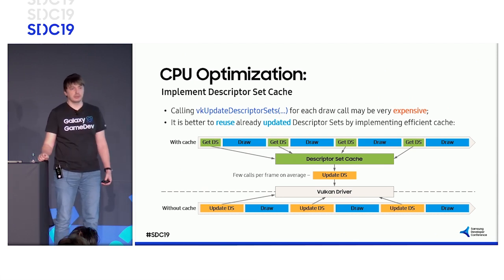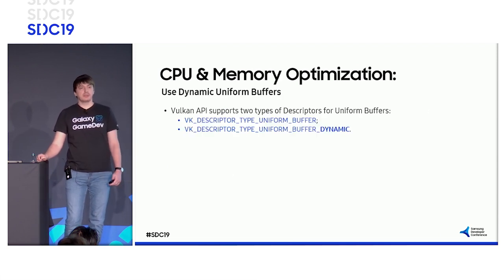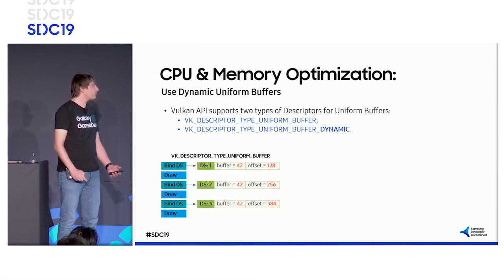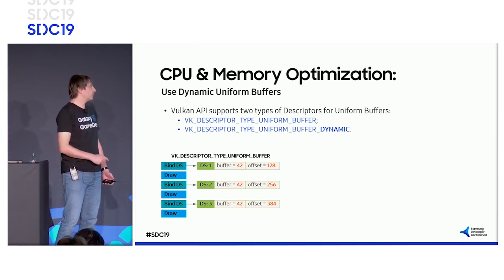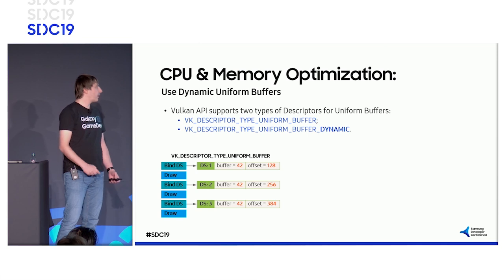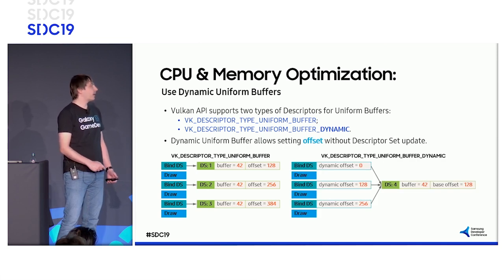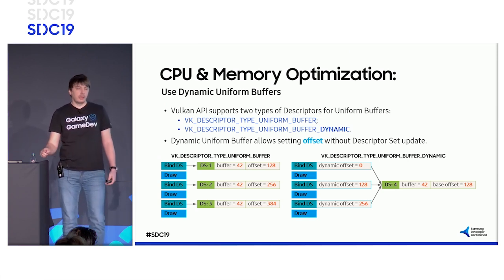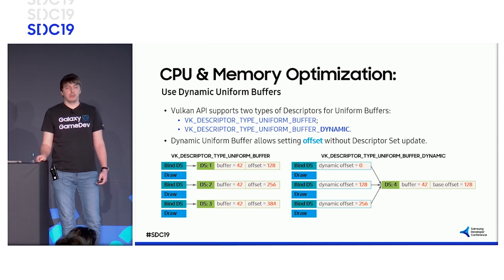Such cases have really happened in our practice. There are two types of descriptors for uniform buffers: normal and dynamic. With normal uniform buffers, to point to different offsets in the same buffer, you need a new descriptor set for each draw call. But with dynamic uniform buffers, you may use a single descriptor set for multiple draw calls. The final offset is calculated as the sum of the base offset inside the descriptor set and dynamic offsets in the bind commands. Dynamic uniform buffers are the first thing you should implement before moving to the descriptor set cache — otherwise, the hit rate will be so bad that almost every cache access will be a cache miss.